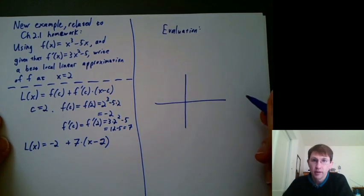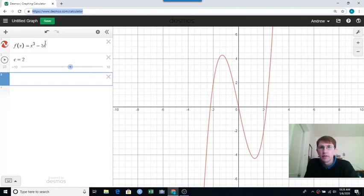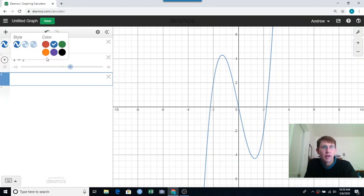So I would load up Desmos, and I have that handy here. Okay, so I've got f entered here, and I'll change it to blue, and I've got c = 2 set up.